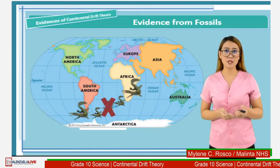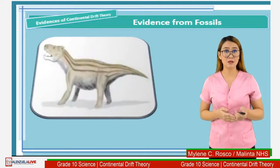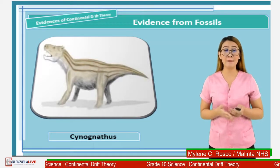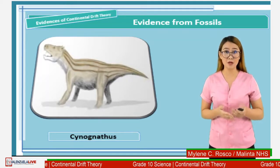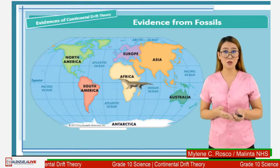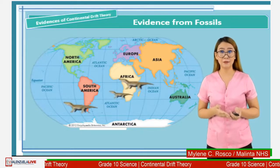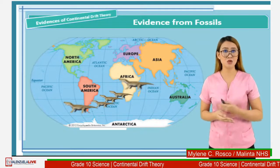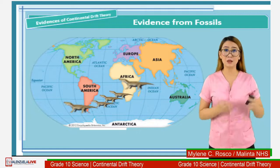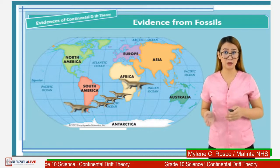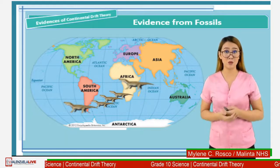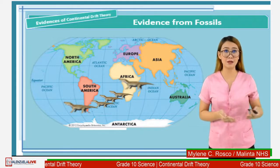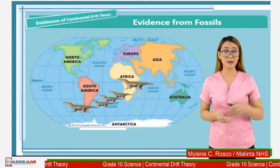Another fossil record is the Cynognathus. Cynognathus are mammal-like reptiles and the fossils of this reptile are found in South America and Africa as well. Cynognathus could not migrate from one continent to another and cross the Atlantic Ocean, as they are land-dominant reptiles that cannot swim over it.